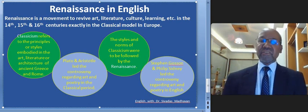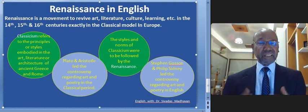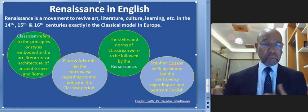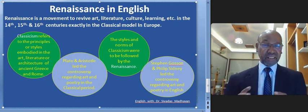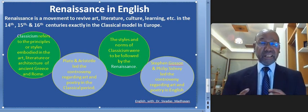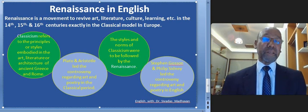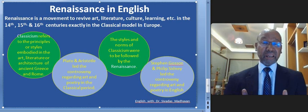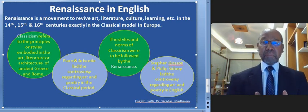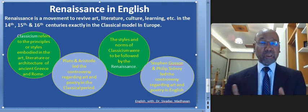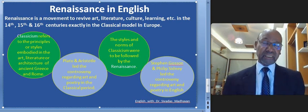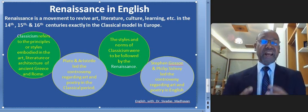Actually, Renaissance is a movement to revive art, literature, culture, learning, etc., exactly in the classical model. And it took place in Europe in the 14th, 15th, 16th and 17th centuries. The literal meaning of Renaissance is rebirth — it is an intellectual rebirth in European countries. And it came to England by the end of the 15th century, which is the beginning of modern age or modern English. The modern English period begins in 1500, and by then, Renaissance had reached England.